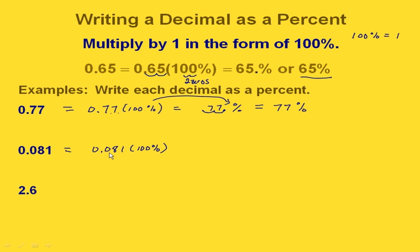For this one, all we have to think about is moving our decimal point over two places to the right. So that would put it to the right of the eight, and that would give us 8.1%.